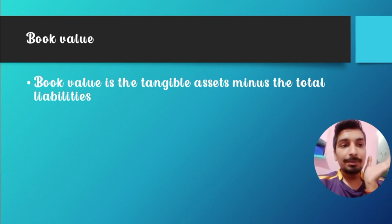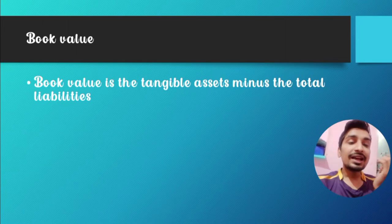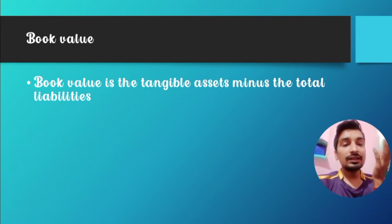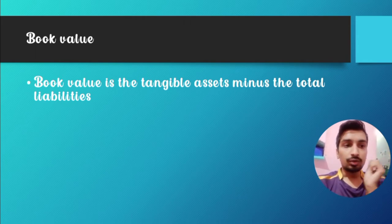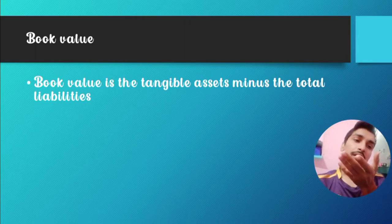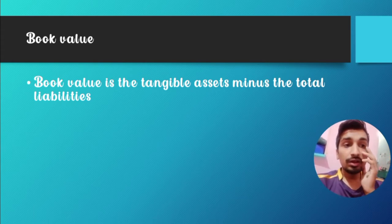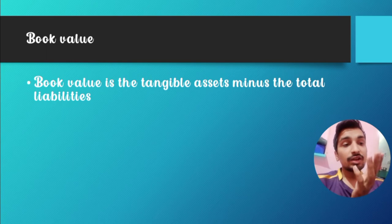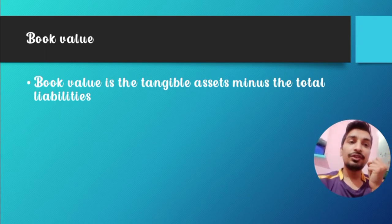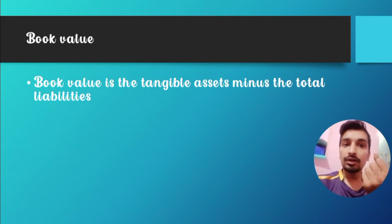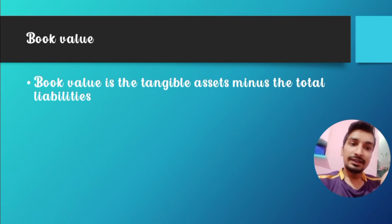An asset, on the other hand, is something like land, a house, or property. When you sell land, the price will be more than you bought it for — for example, land bought for 1 lakh might be worth 1.5 lakh after a year. Assets give you profit and make you earn, while liabilities take your money away.